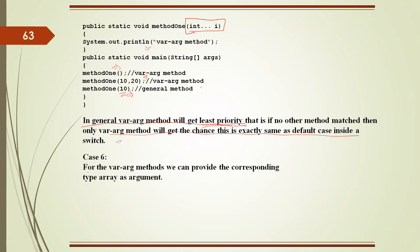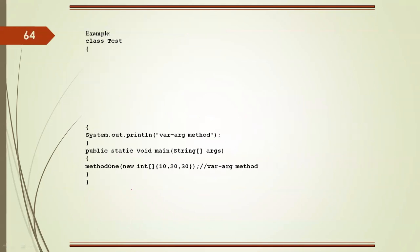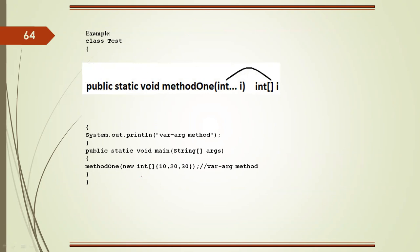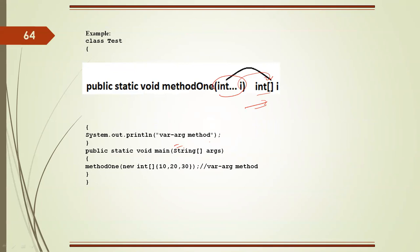Case 6: For a varargs method, we can provide the corresponding type as the argument. Internally, as I showed in the IDE, the varargs becomes a single-dimensional array. You can also pass an anonymous array as the argument.